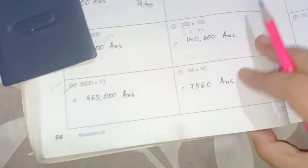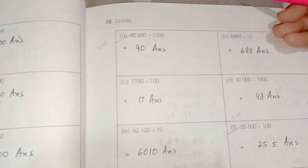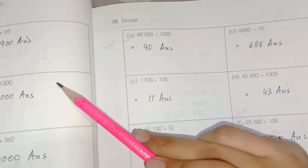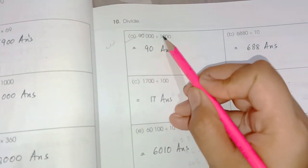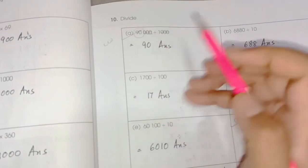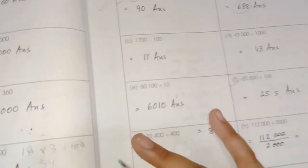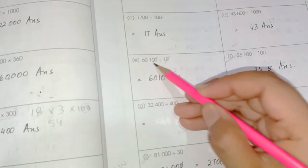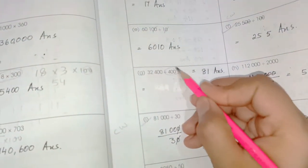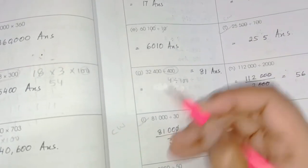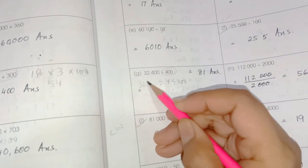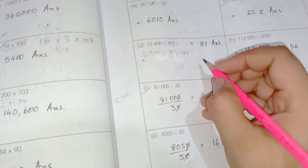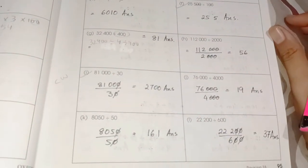On page number 95, here we have to divide. In division we cut the zeros, whereas in multiplication we add zeros. Here we have three zeros — we cut three zeros so the answer is 90. Cutting a single zero gives 688. Cutting two zeros gives 17. For 400 ÷ 4, we first divide 3,240 by 4, then cut the two zeros. Same method is used to solve all the remaining questions.